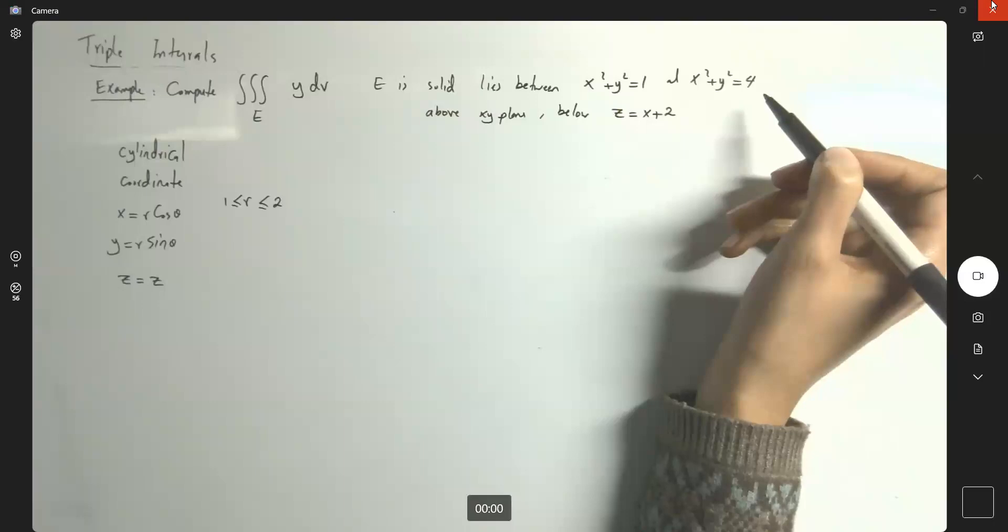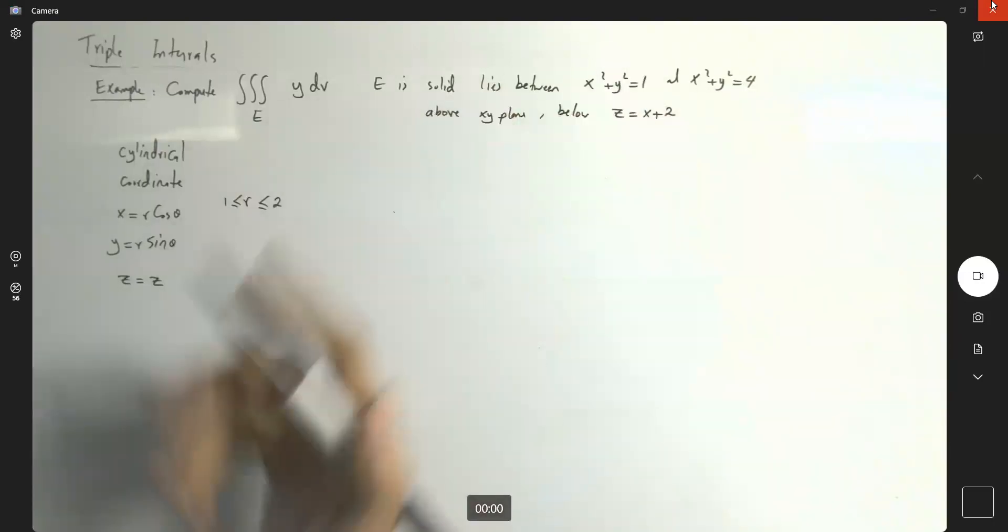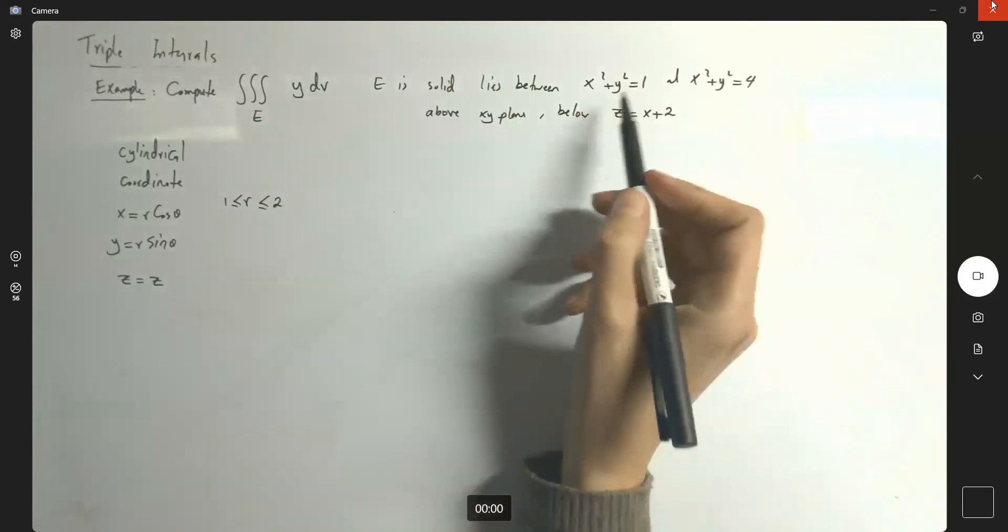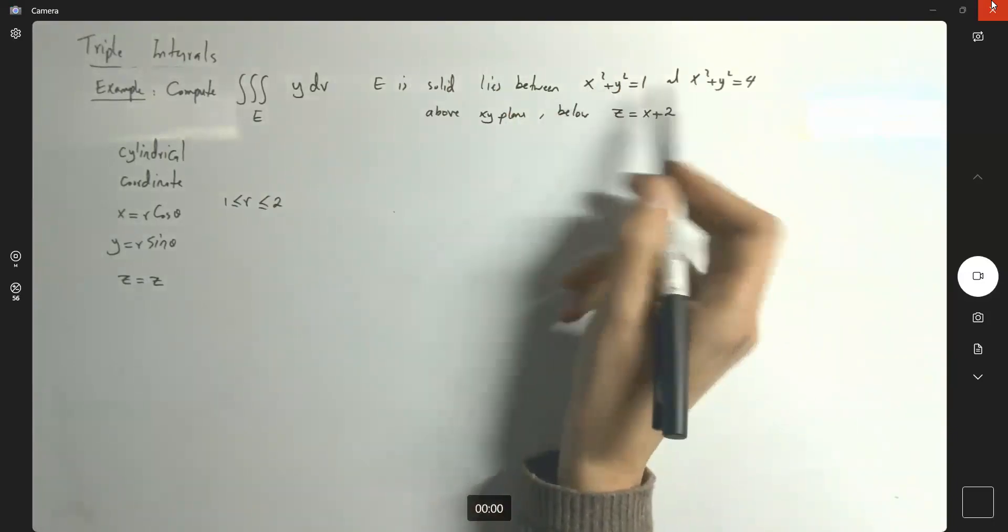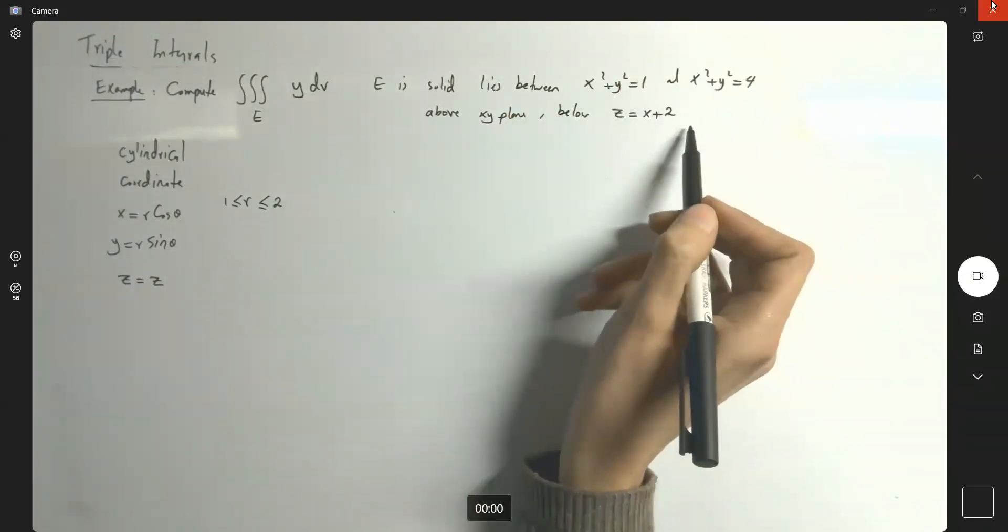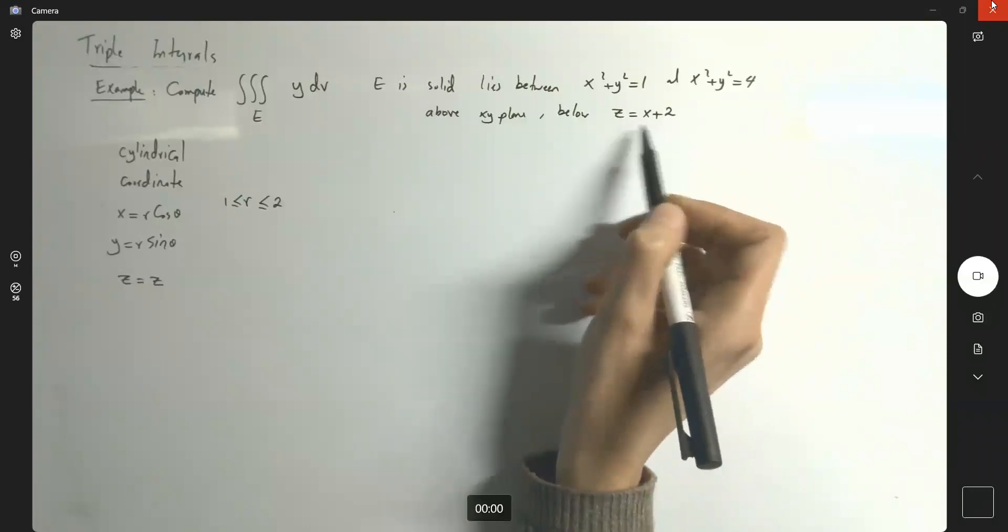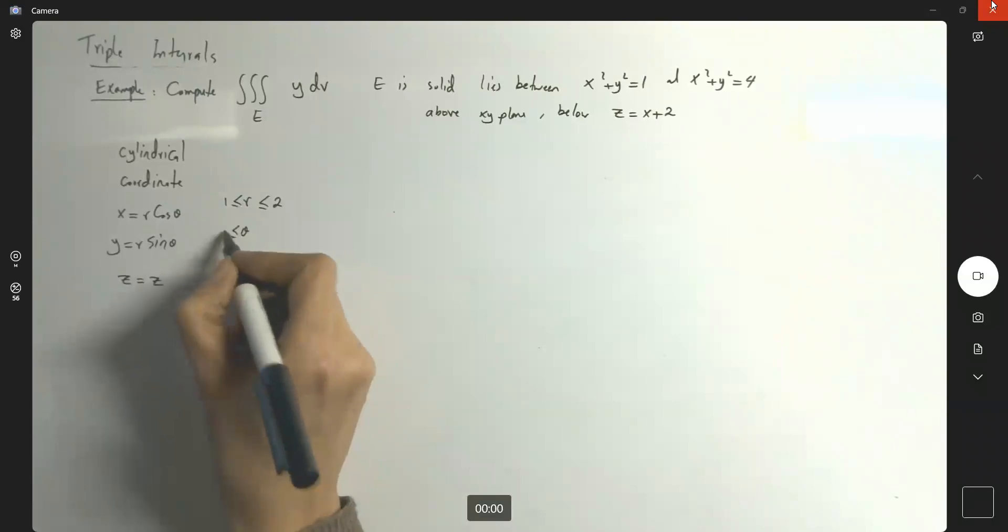So far so good. So another thing is, if I slice this, my theta is going to be bounded between 0 and 2 pi. And note that this is a nice plane, x plus 2. It only changes the boundary for my z.